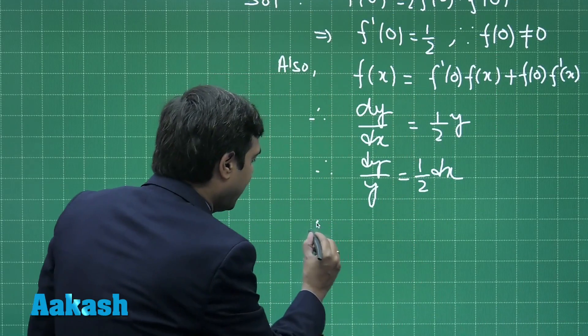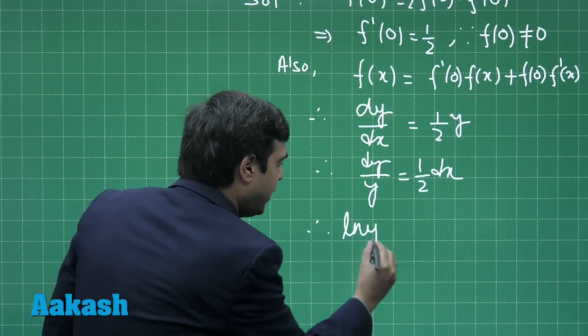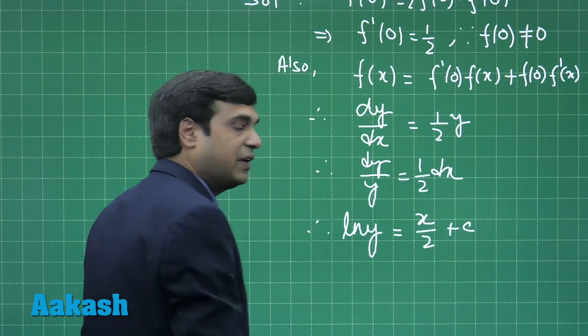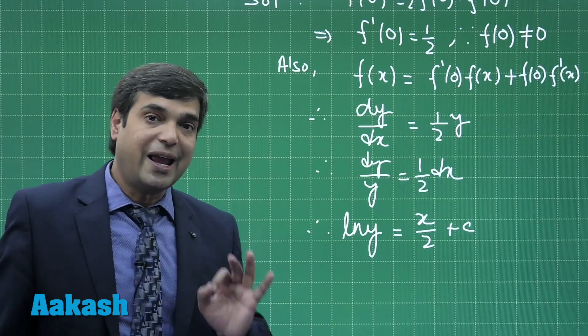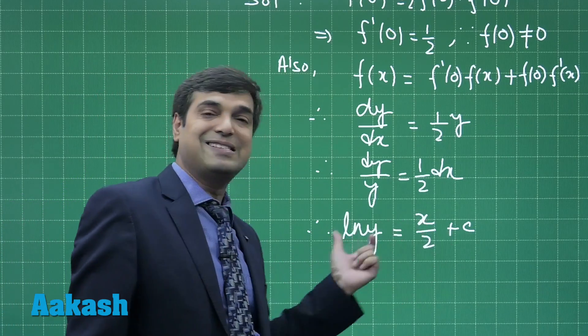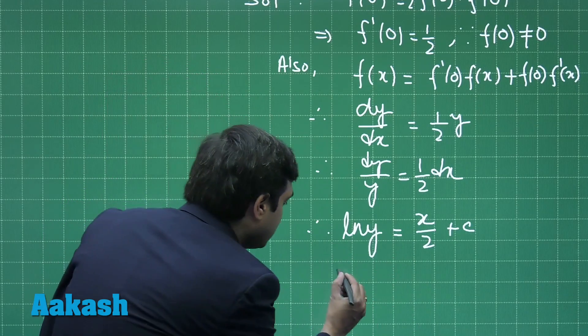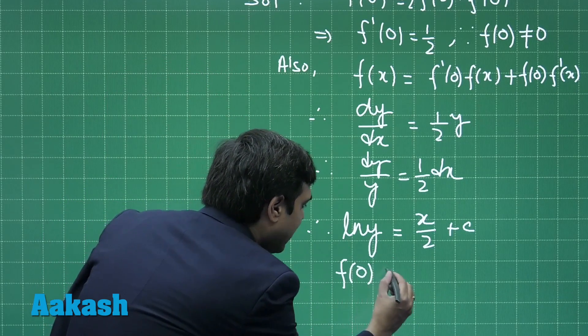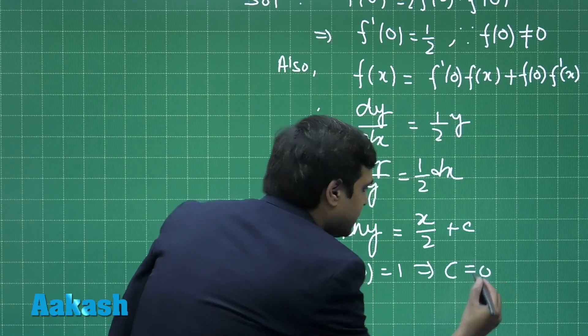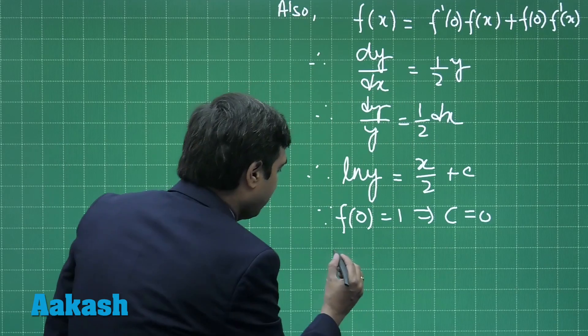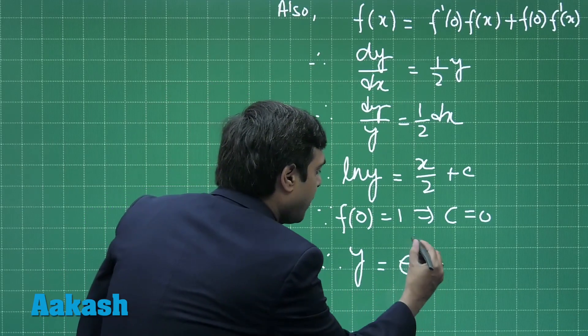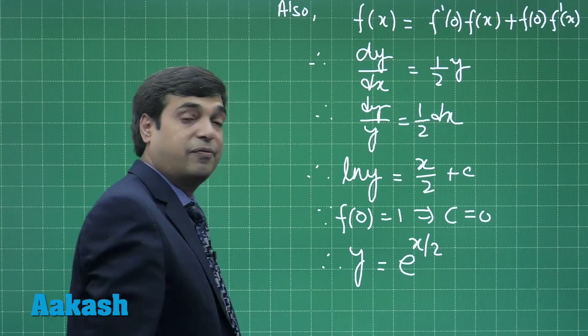Integrating this equation we get log y equals x/2 plus constant of integration. It is given that f(0) is 1, so when x equals 0, y is 1, meaning c comes out as 0. Simply we have y equals e to the power x/2 as the function.